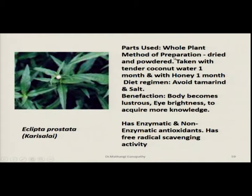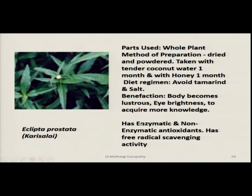Eclipta prostrata — the whole plant is used, as in the case of Phyllanthus. The plant is dried, powdered, and extracted; the extract is taken with tender coconut water for one month, followed by the powder mixed with honey for another month. Diet restriction again requires avoiding tamarind and salt. The body becomes vigorous, eyes become bright, and memory is boosted. Scientifically, this plant contains enzymatic and non-enzymatic antioxidants which have free radical scavenging activity.